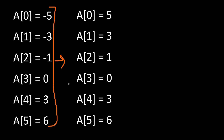For example, 5 is the first distinct element, then we have number 3 which is the second element, then number 1 the third, 0 the fourth element. 3 was already counted so we don't count it again.